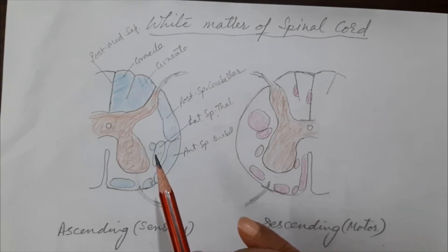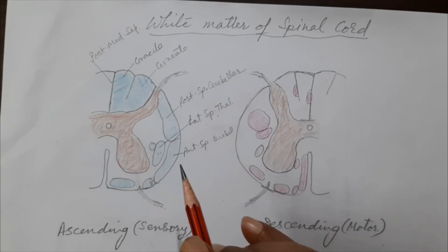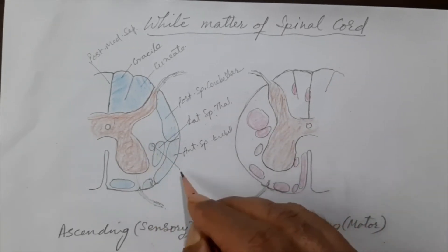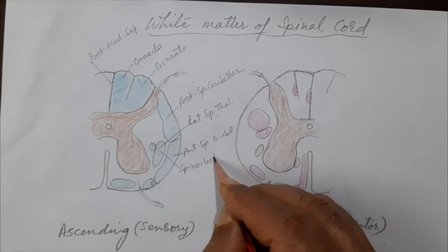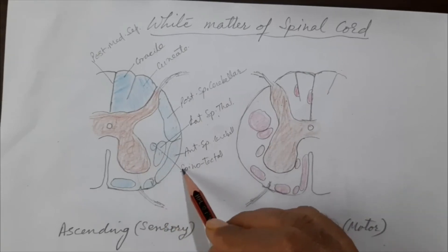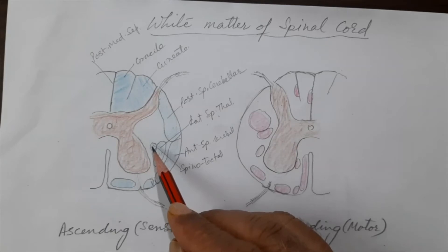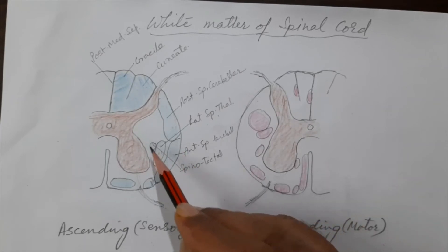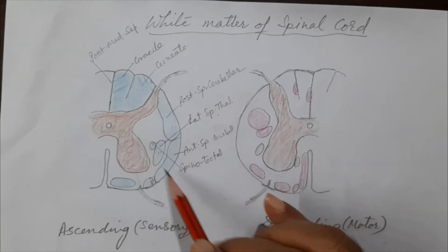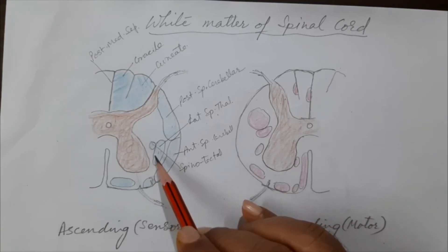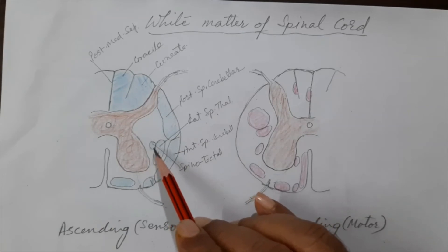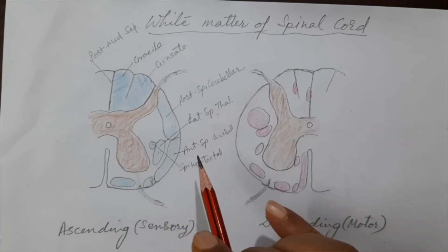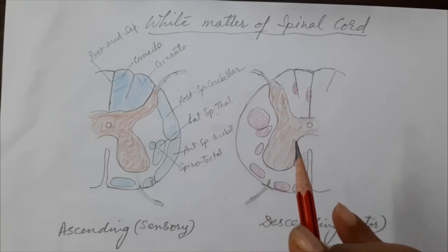Another tract in the lateral funiculus is the spinotectal tract, which goes from the spinal cord to the superior colliculus in the brain. This tract is involved in the spinal visual reflex, because the superior colliculus is the lower center for visual reflexes — for example, turning your head toward the source of light.